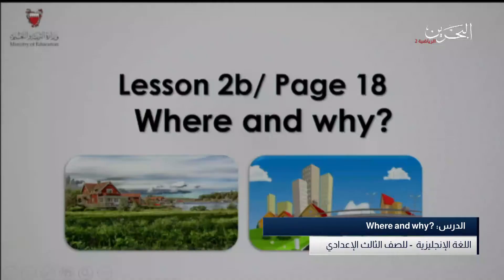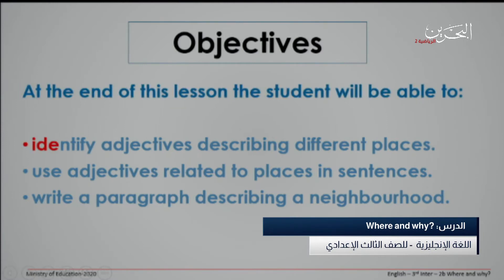Hello again, third intermediate students. We're having another lesson today from Upstream 3, Unit 2. Our lesson is titled 'To Be,' on page 18, titled 'Where and Why.' The objectives of our lesson are to identify adjectives describing different places, to use adjectives related to places in sentences, and then to write a paragraph describing a neighborhood.